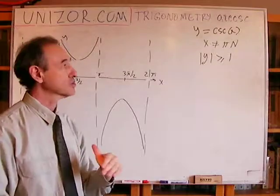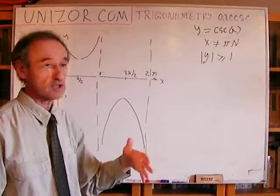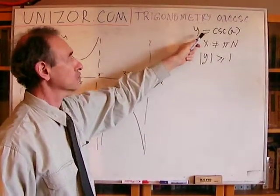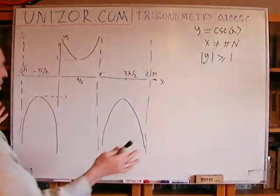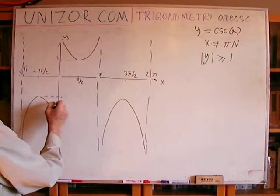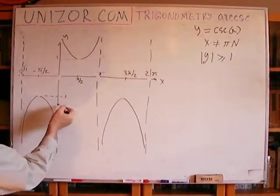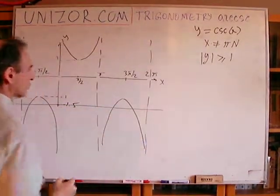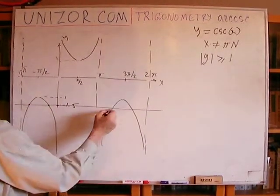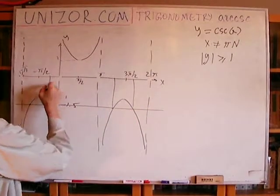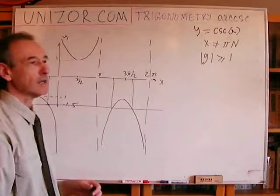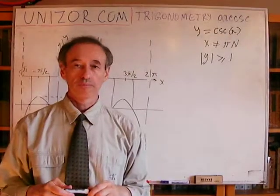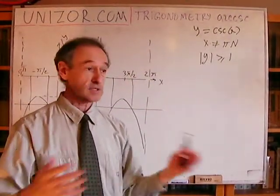Now, we know that whenever we are switching to inverse function, whatever used to be domain becomes a range, whatever used to be range becomes domain. However, what we have to do is we have to be able to find for the value of the function, value of the argument. And in this case, we cannot do it. If you take the value of the function, let's say, this. Minus whatever, 1 and a half. Minus 1.5. Now, you draw this horizontal line and wherever we intersect our graph, so all these arguments are arguments where the function is equal to minus 1 and a half. So we cannot identify a single argument which can be put into correspondence to a single value of the function. So there is no inverse function.